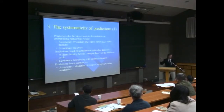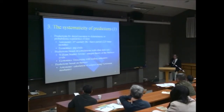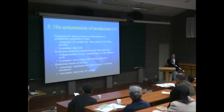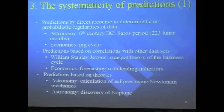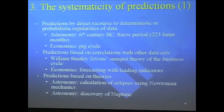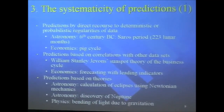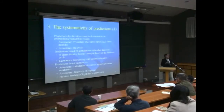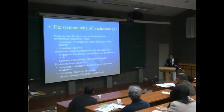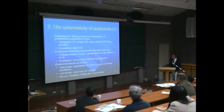The calculation of eclipses using Newtonian mechanics can predict the next 5,000 eclipses with precision to half a second — a triumph of Newtonian mechanics. The discovery of Neptune was also done on the basis of Newtonian theory. And Einstein's famous prediction of the bending of light due to gravitation was empirically verified in 1919 by Eddington's solar eclipse expedition.